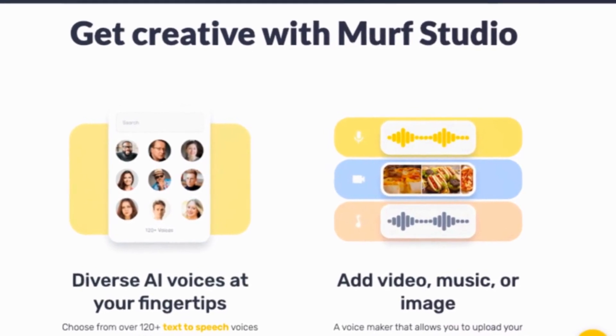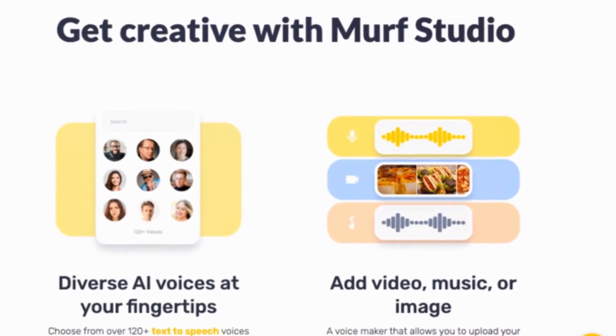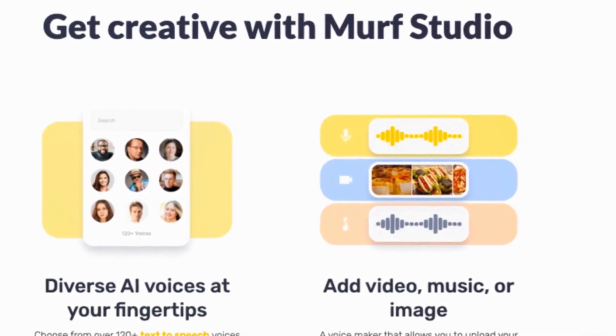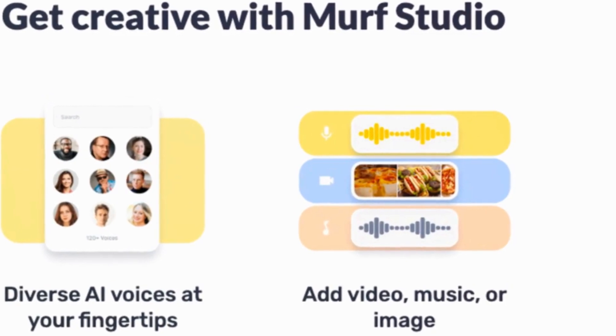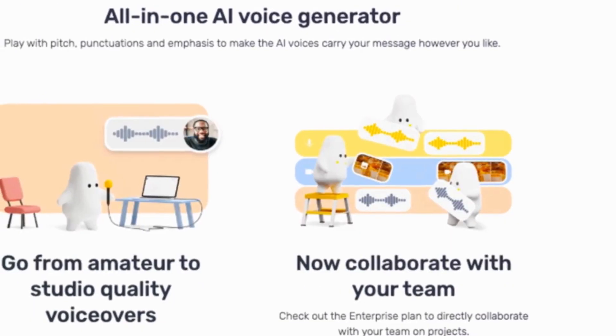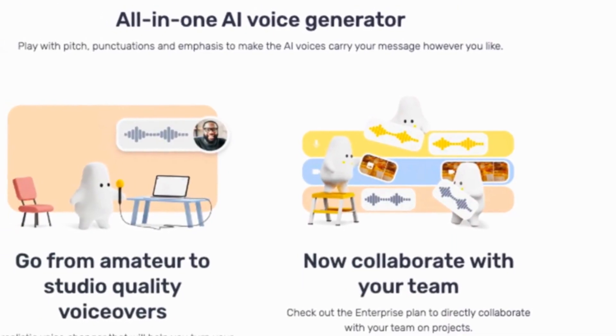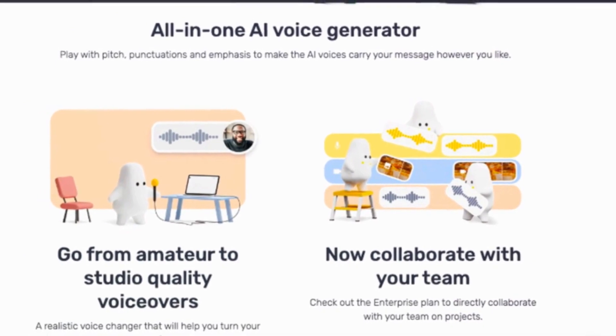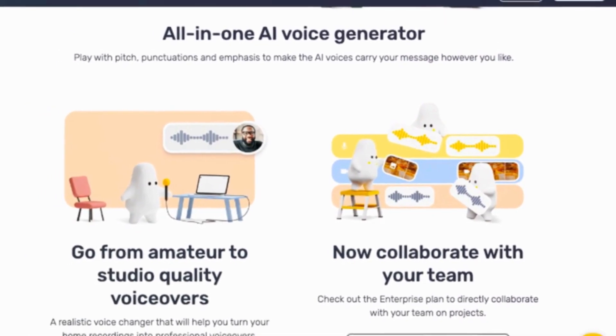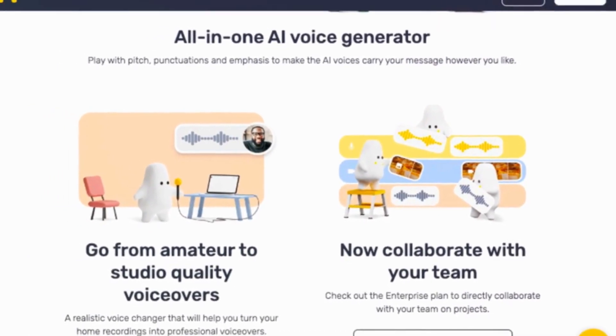This is perfect for advertisements, IVR, or character voices in games and animations. Murph also supports an AI voice changer feature — you can upload a raw home recording and convert it into a professional quality voiceover with the voice of your choice. No more worrying about expensive recording equipment or hiring a voice actor.